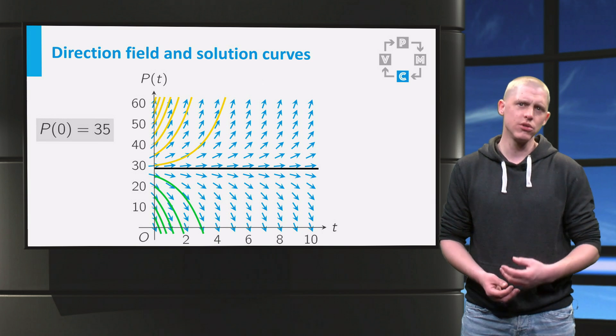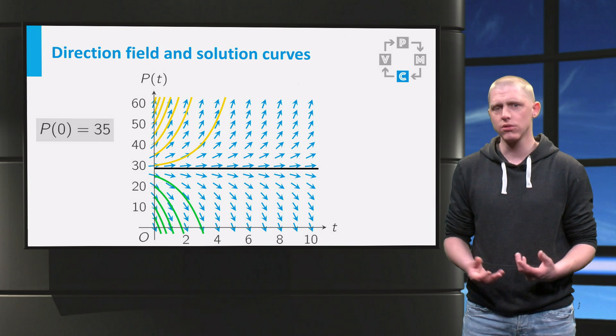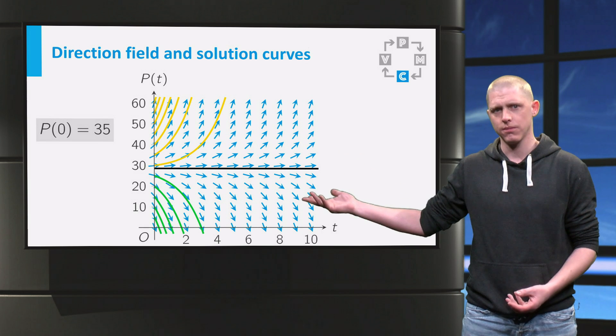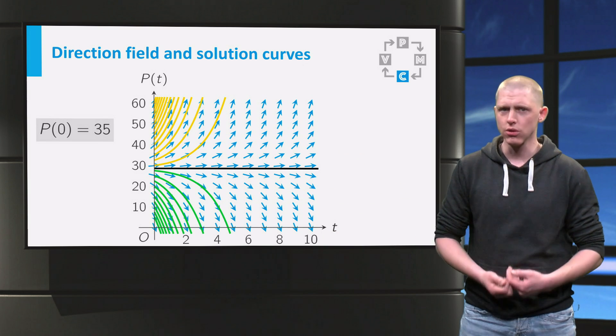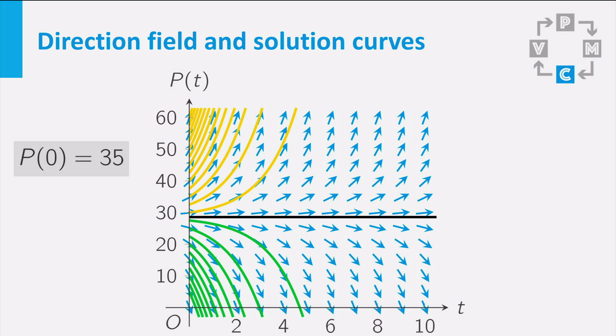You can continue to sketch some solution curves, which should give you a graph like this. Adding even more solution curves gives you this graph. Looking at this graph, you see two regions in which the solution curves behave differently.